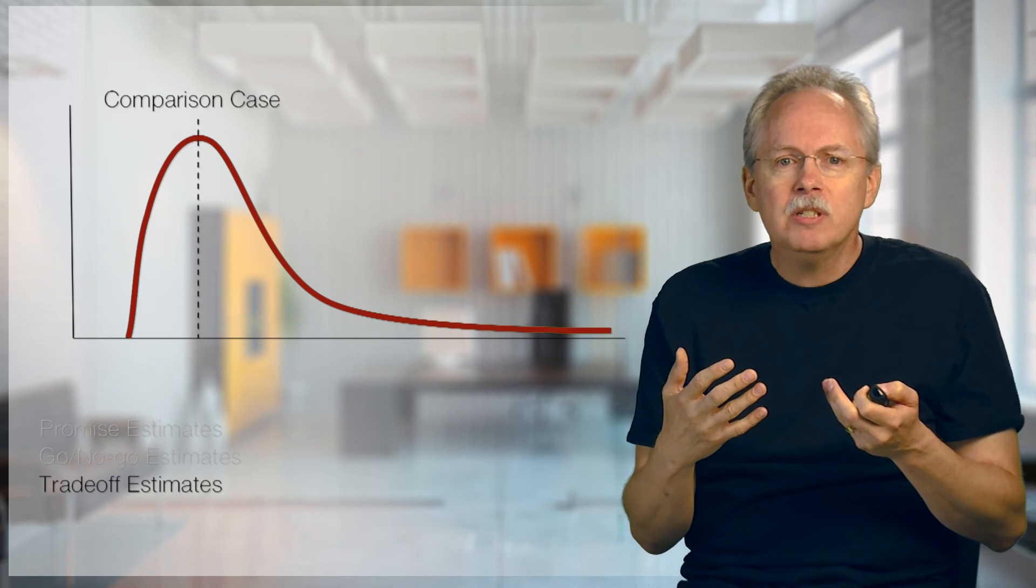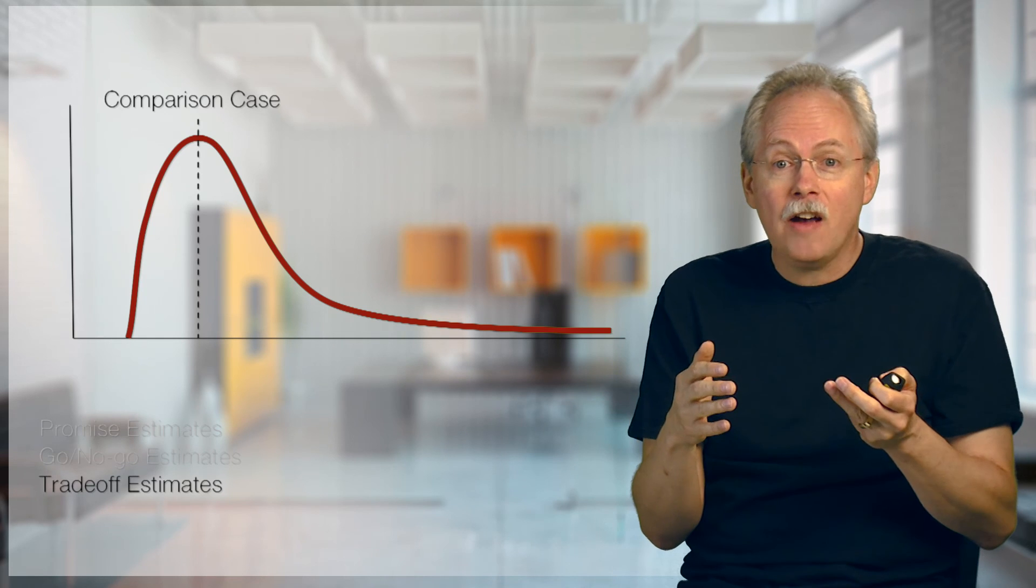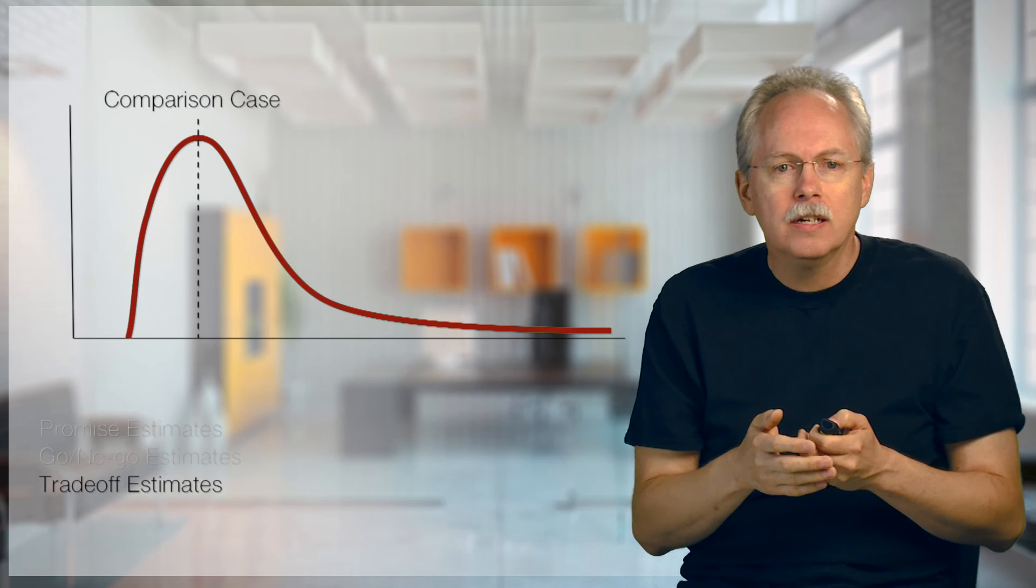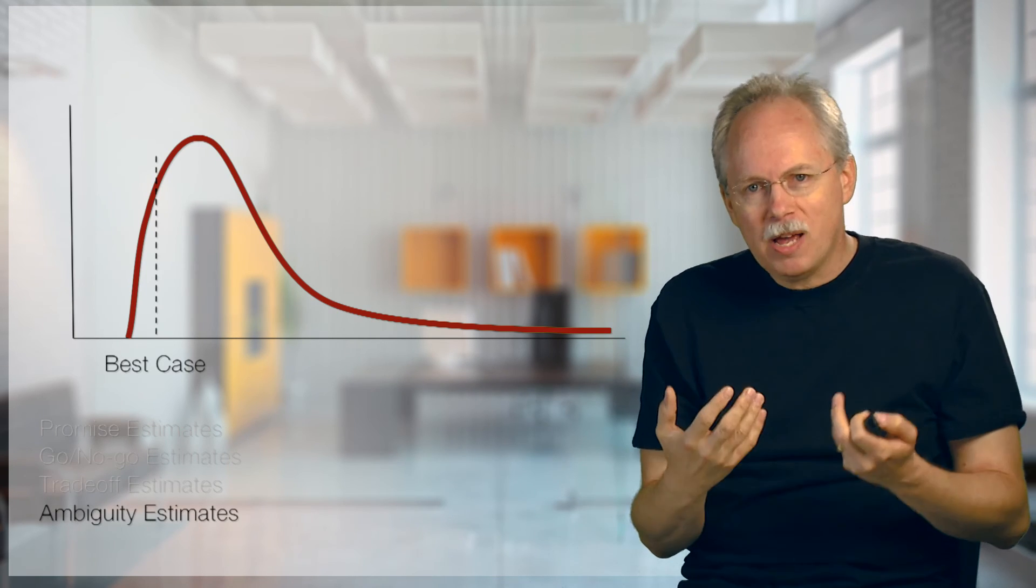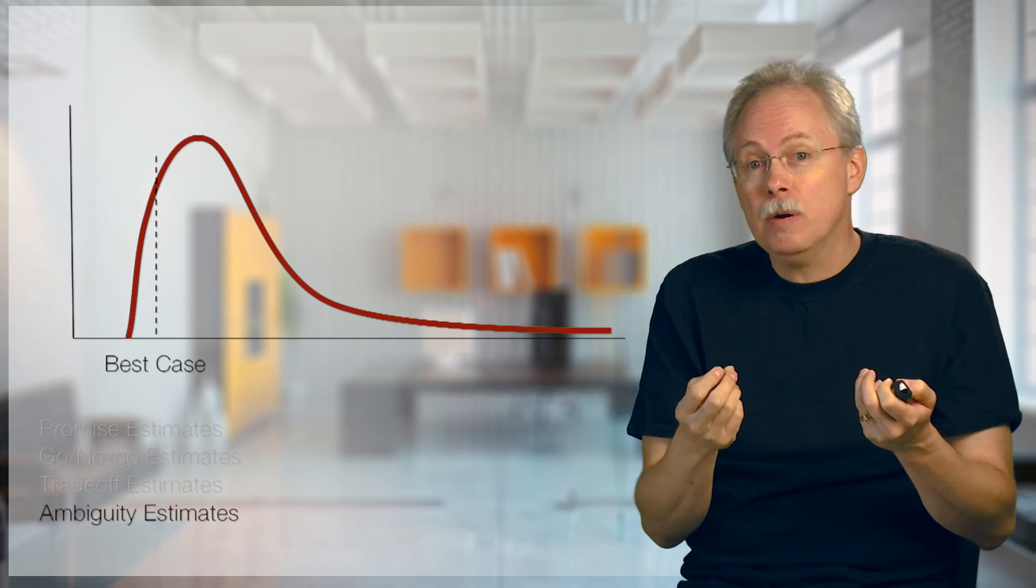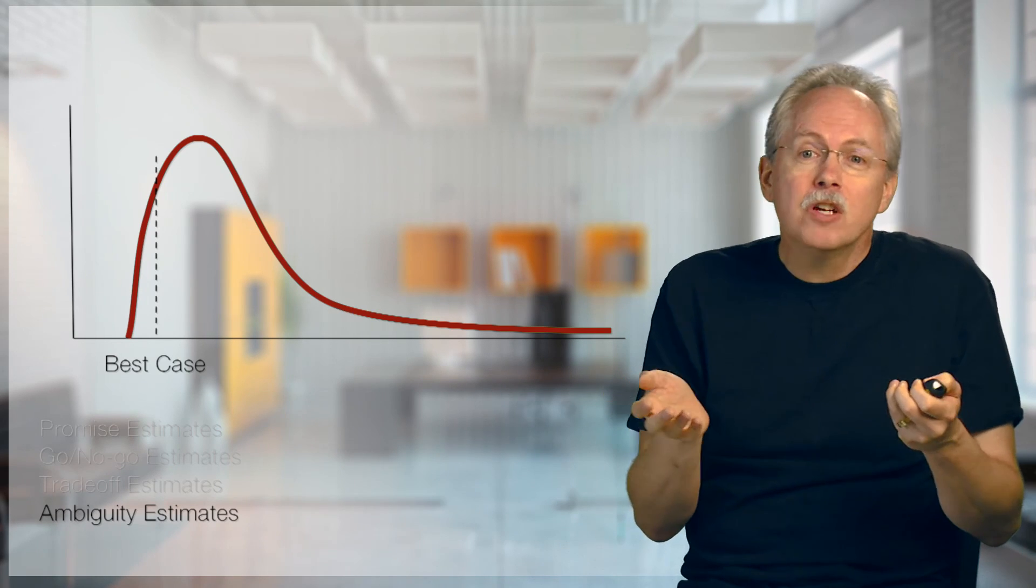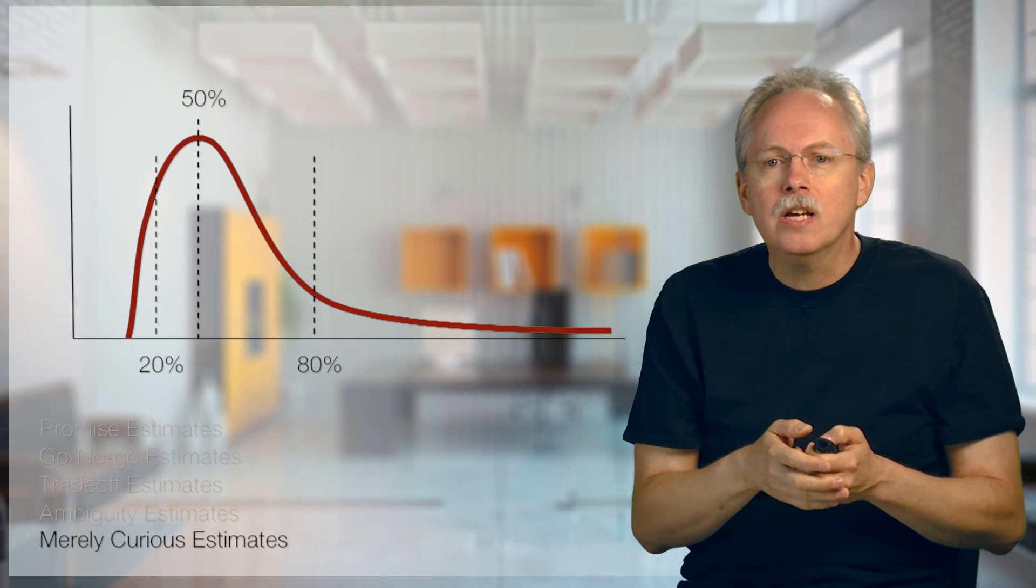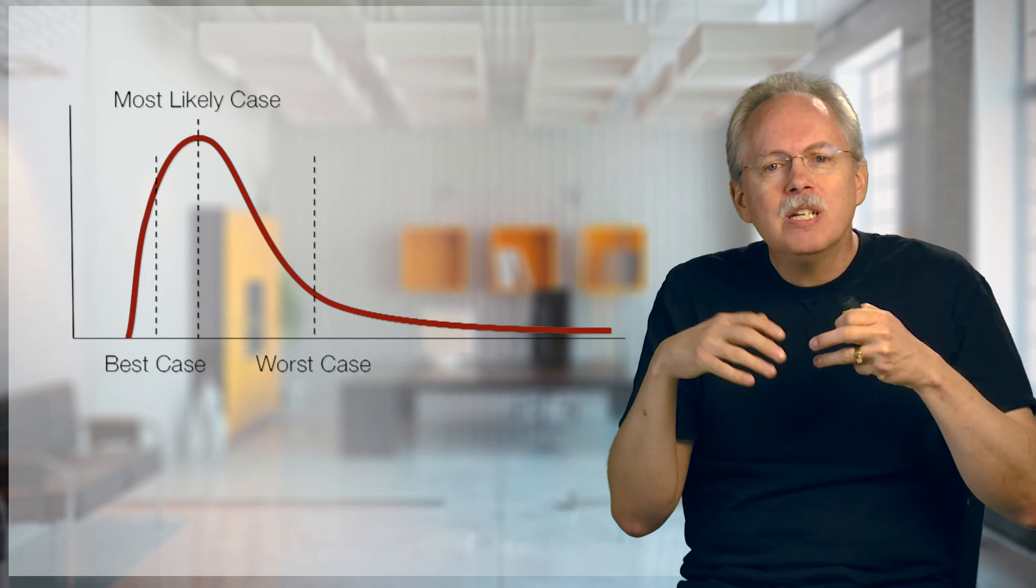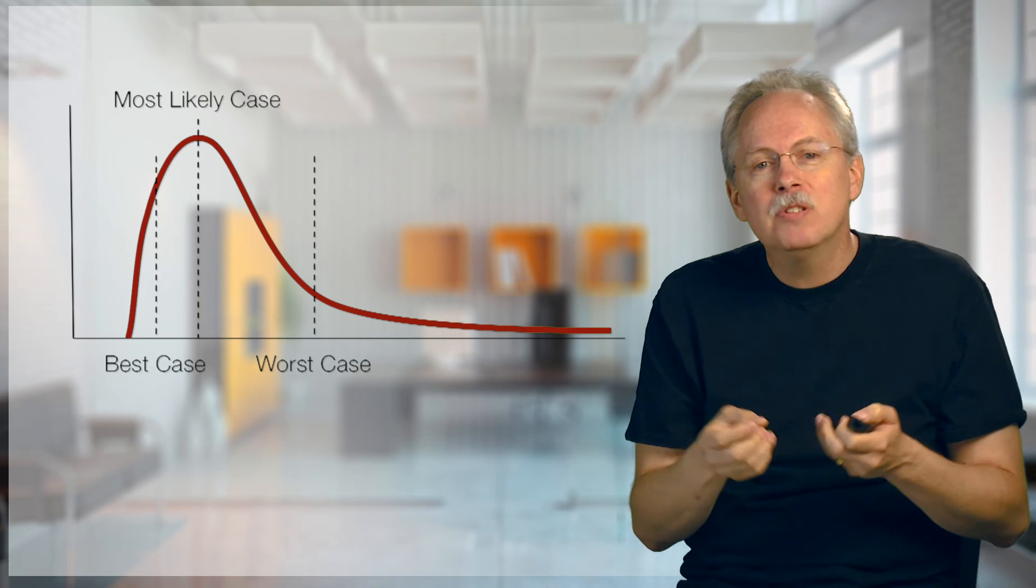For our tradeoff estimates, we tend to use the comparison case, the most likely point on the curve, because it helps us make that tradeoff decisions. Again, it may not actually happen, but we can make decisions if we estimate the same way. For my ambiguity estimates, I tend to use the best case, because they're quicker and easier to generate. And my goal here is not to come up with the perfect promise, but to say, yeah, do we understand the work the same way? And if I ever do one for the merely curious, I'm going to be using the three-point estimate, the 20, the 50, and the 80. But either way, remember that an estimate is a whole distribution, that you can use all kinds of points for different types of estimates.